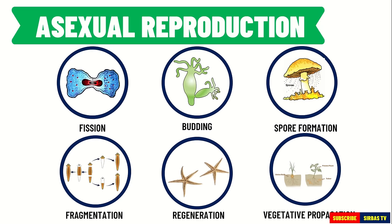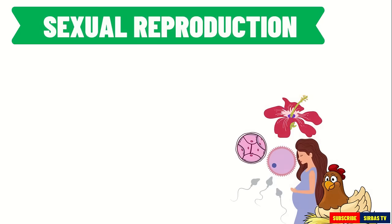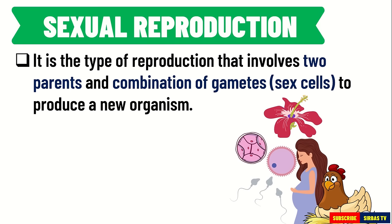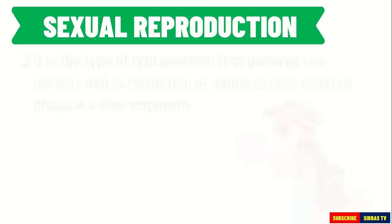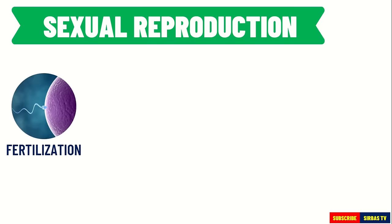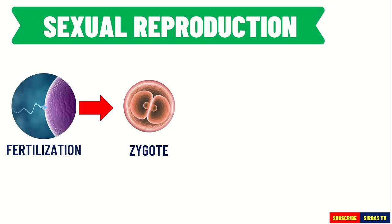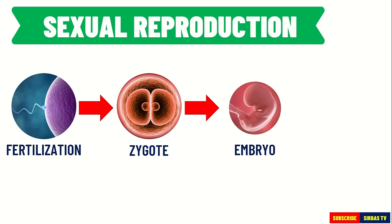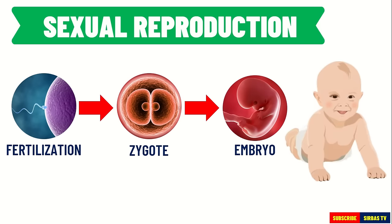We are going to discuss these in detail in our next video. Sexual reproduction is the type of reproduction that involves two parents, a male and a female, to produce new individuals. Among animals, the male produces sperm cells and the female an egg cell. Sperm cell and egg cell are collectively called gametes. When these gametes unite, the process is called fertilization. A zygote or a fertilized egg is the result of fertilization. The zygote then develops and becomes an embryo. It will continue to develop until it reaches maturity to be born.